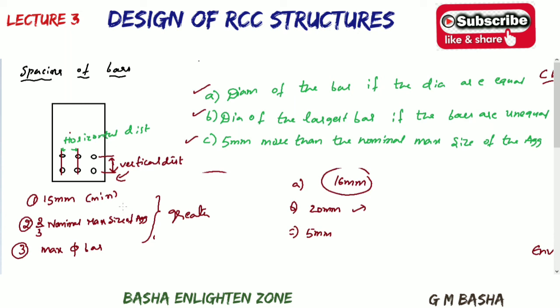The maximum spacing of bars in tension for beams is taken from Table 15 of IS 456. All these basic concepts — types of sections, limiting moment, effective span, clear cover, side face reinforcement, and bar spacing — cover the essential knowledge required before going to the actual design of RCC members. I hope you understand.